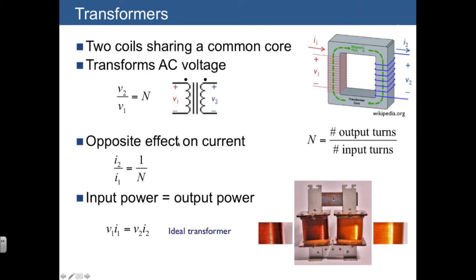The effect on current is actually the opposite. So looking at the current coming out and the current going in, the ratio between the current going out and the current going in is actually 1 over n.